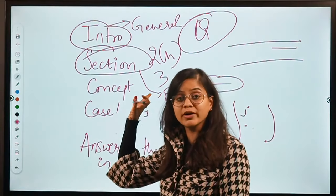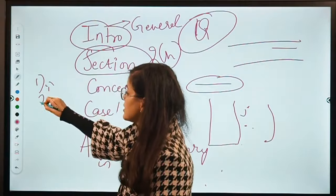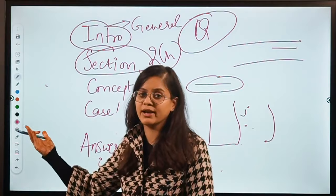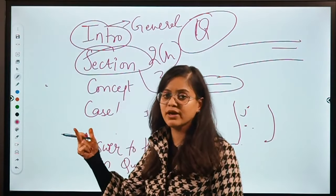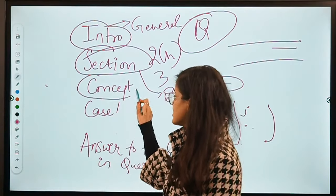So in order to lay down these sections, you need not learn the section word by word. What you need to do is you need to list out all the important essentials that are there. And in order to lay down these essentials, what is important is bare act. So bare act you must be aware of, you must have the knowledge of what is mentioned in the bare act.